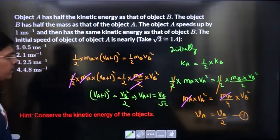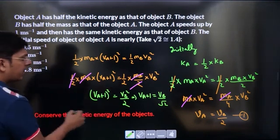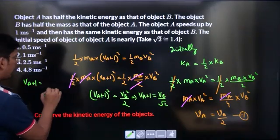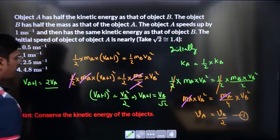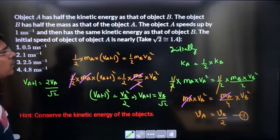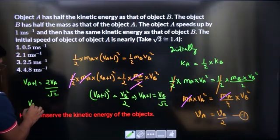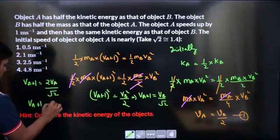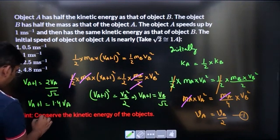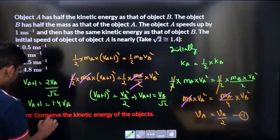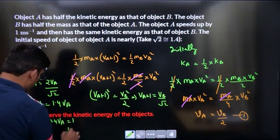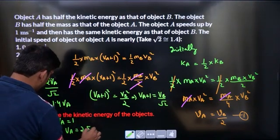Taking the square root, VA plus 1 would be VB divided by root 2. From here VB would be 2VA divided by root 2. Root 2 is 1.4, so VA plus 1 equals 1.4 times VA. This 0.4 times VA equals 1, so VA would be 1 upon 0.4 which is 2.5.